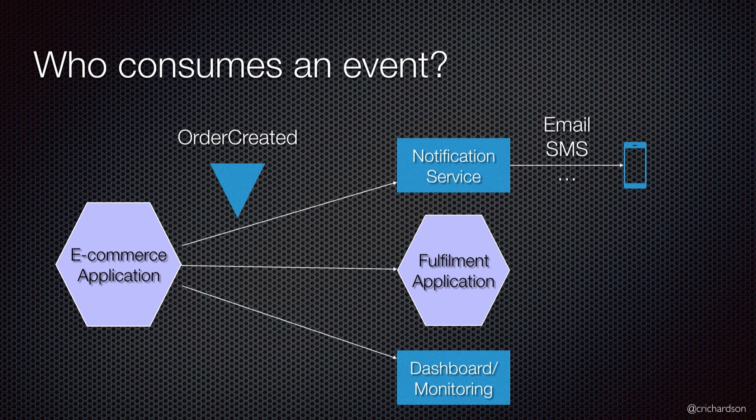Events could also be consumed by a monitoring system. A great way of figuring out whether your application is working correctly is by analyzing the stream of business events coming out of it and making sure that the pattern of events is normal. If you see an unexpected drop-off in order created events, that's worthy of investigation — maybe something is preventing users from completing the checkout process, like the checkout button becoming invisible because of a CSS error.